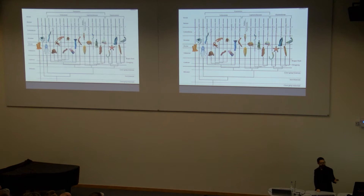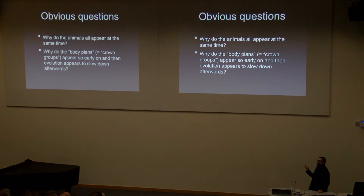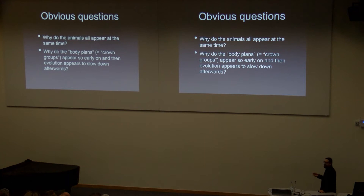So we want to ask, people in the Cambrian explosion community and other types of community are constantly asking these kinds of questions. Why do the animals all appear at the same time? Why do the body plans and the crown groups appear so early on in the history of the clades? And then why does nothing appear to happen afterwards? You get this enormous radiation of everything, and then a very long four or five hundred million years of not very much happening, allegedly anyway.